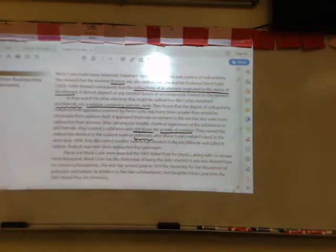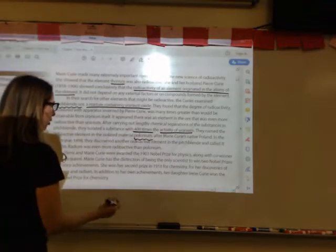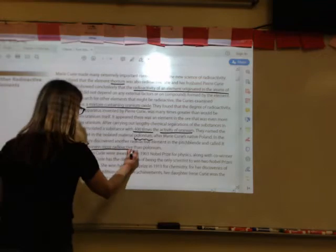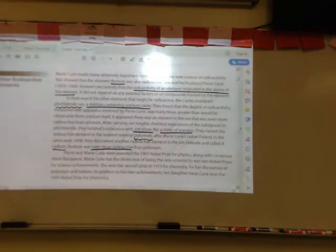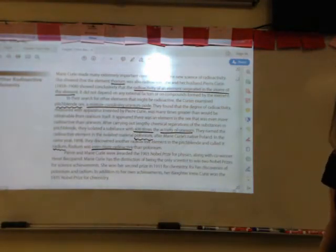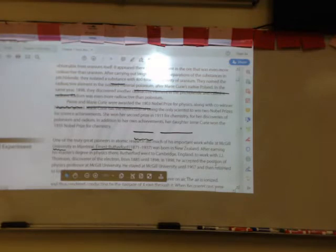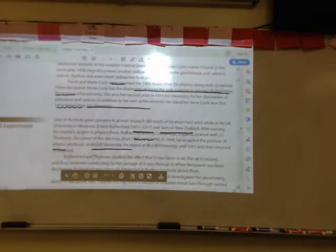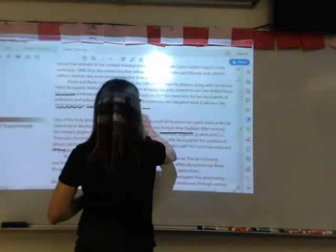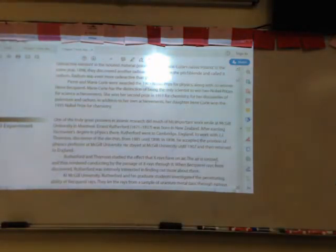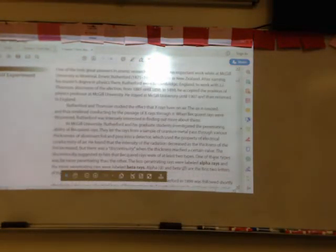It's named polonium because Marie Curie is from Poland. In the same year, in 1898, they discovered another radioactive element in the pitch blend called radium. And that was even more reactive than polonium. Marie and Pierre Curie were awarded the Nobel Prize in 1903. Marie Curie also won another Nobel Prize in 1911 for chemistry. So she's the only scientist to win two Nobel Prizes for science. And her daughter, Irene Curie, won a Nobel Prize for chemistry in 1935. Let's go on to the FOIL experiment here.